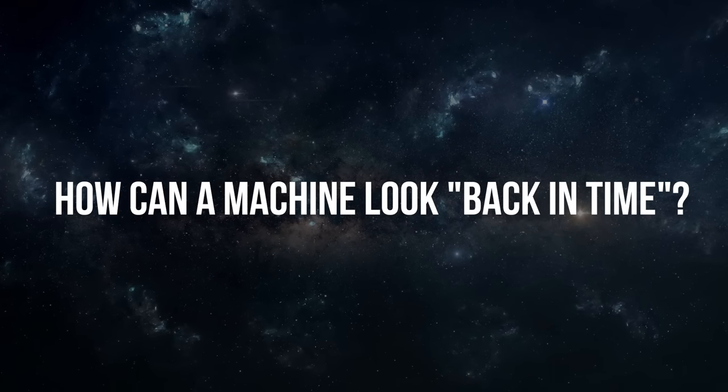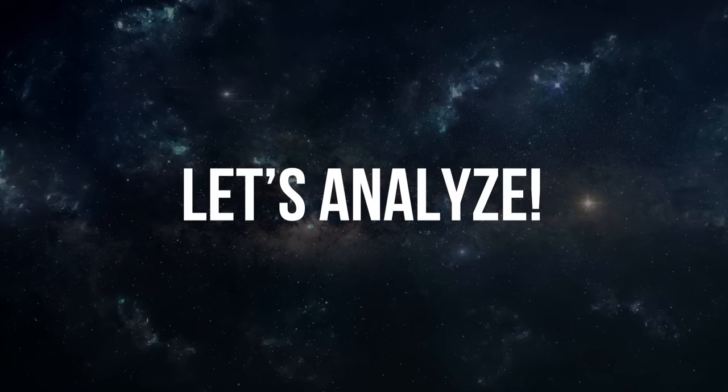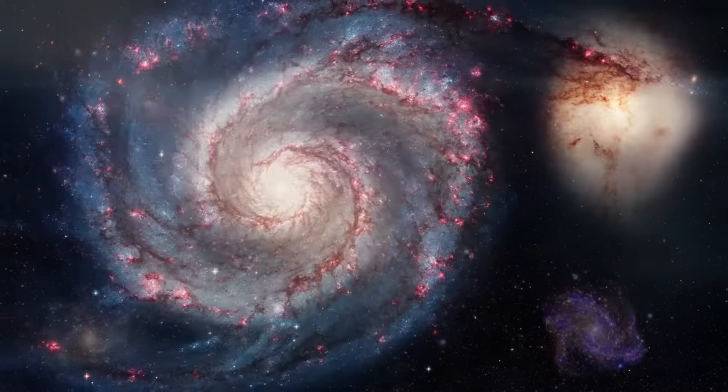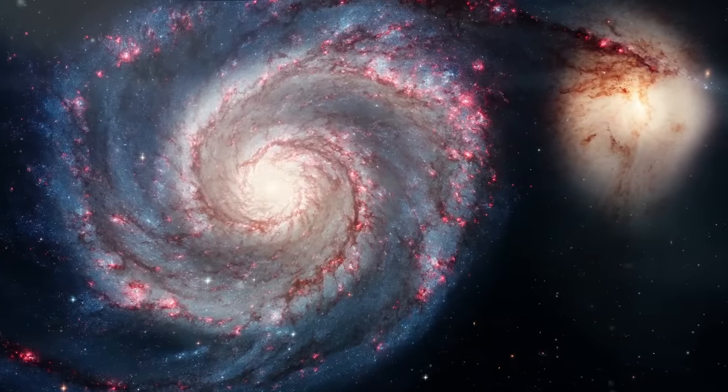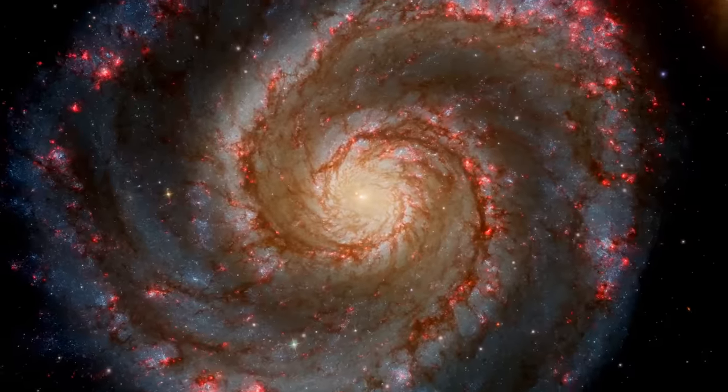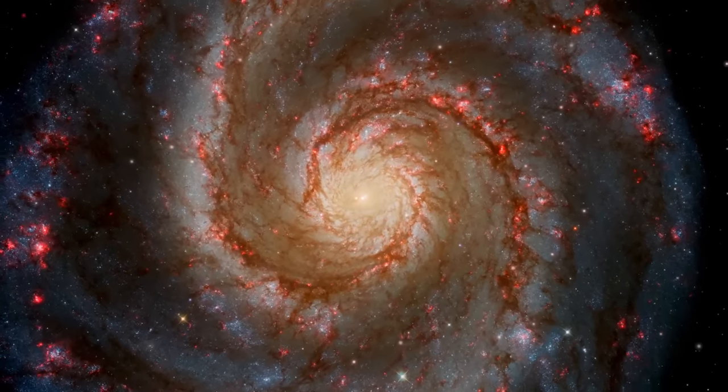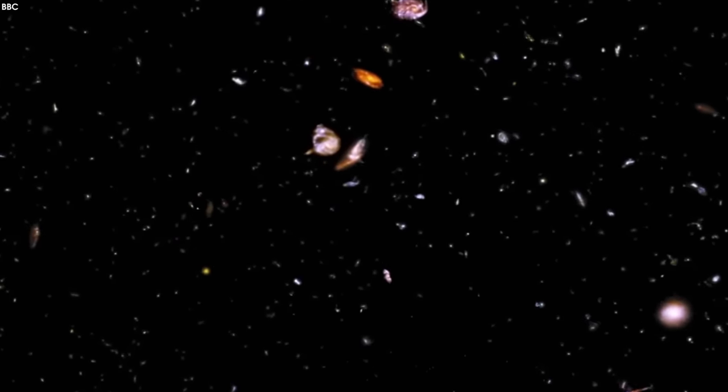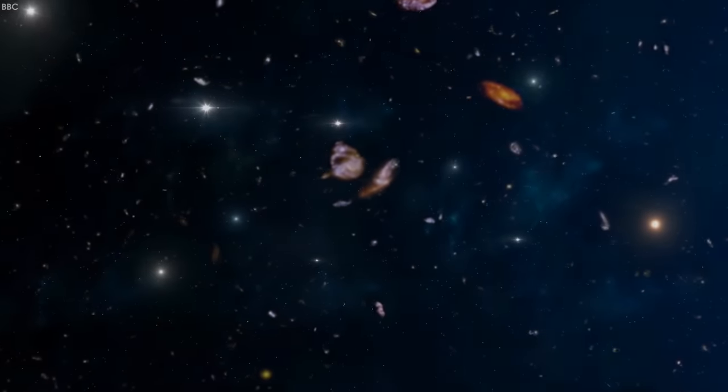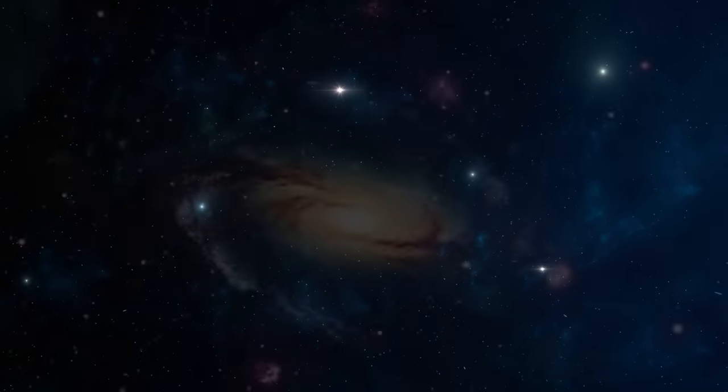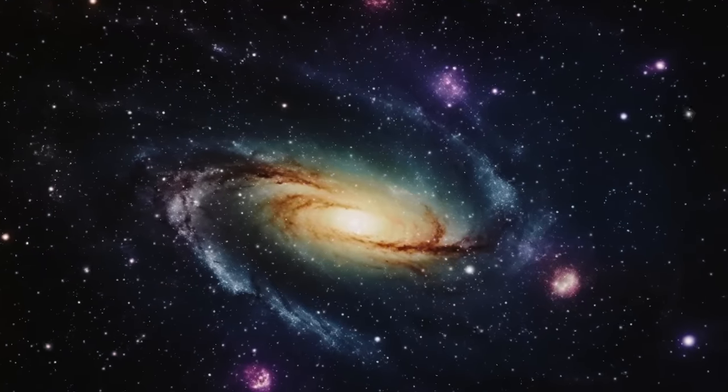But how is this possible? How can a machine look back in time? When we look out into the universe, we see a variety of galaxy shapes, some with magnificent spiraling arms, others that appear to glow like giant light bulbs. These galaxies haven't always had these familiar shapes. Galaxies in the early universe were probably small, unformed clumps.